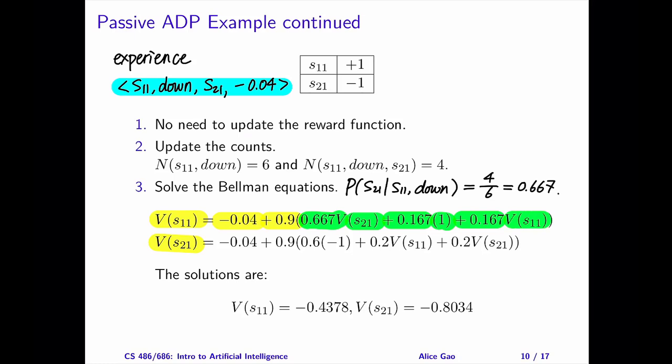Note that this equation only has two variables. One is V of S11 and the other one is V of S21. Given these two equations, you can solve them using your favorite linear algebra technique. I put the answers below so you can verify them.